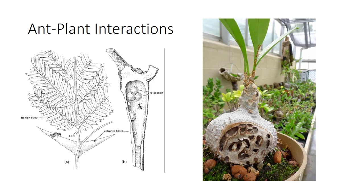Domatia — little houses — may be hollow stems, tubers, swollen petioles, or thorns, which are used by ants either for feeding or as nest sites, or both. True domatia are cavities that form independently of ants. Ant plants, or myrmecophytes, often are trees, shrubs, or vines in the understory of tropical lowland rainforest. Ants benefit from the association with myrmecophytes by having shelter and readily available food. Food comes either directly from the plant through food bodies or extra-floral nectaries, or indirectly via honeydew-producing Hemipterans living within the domatia.